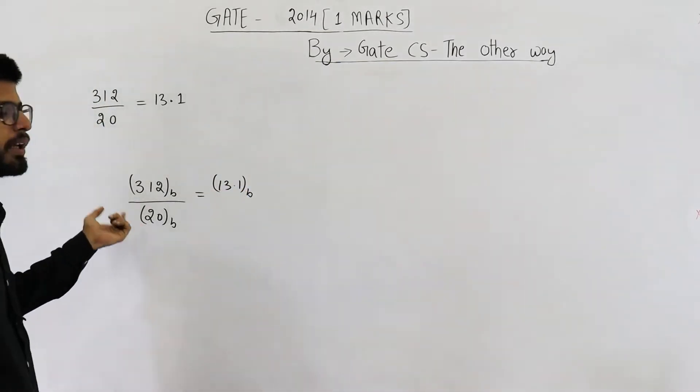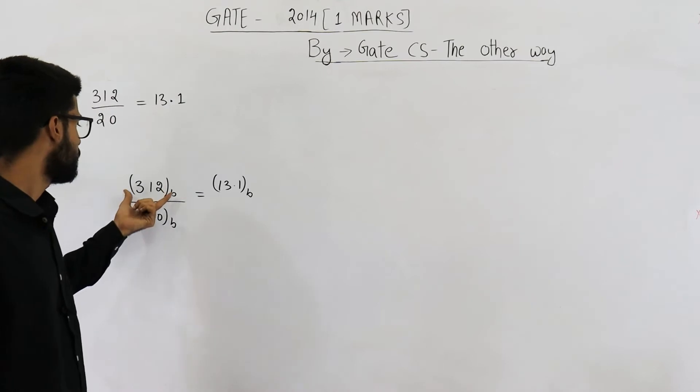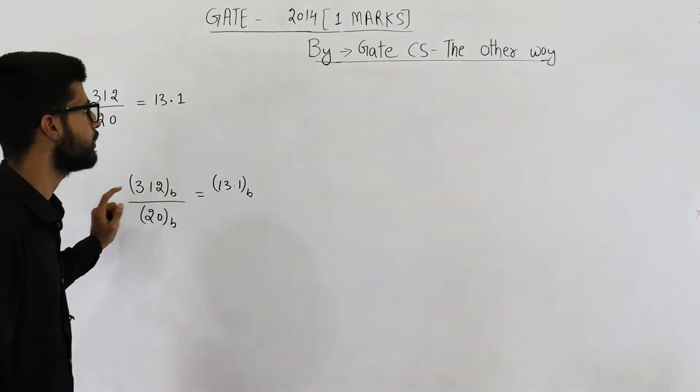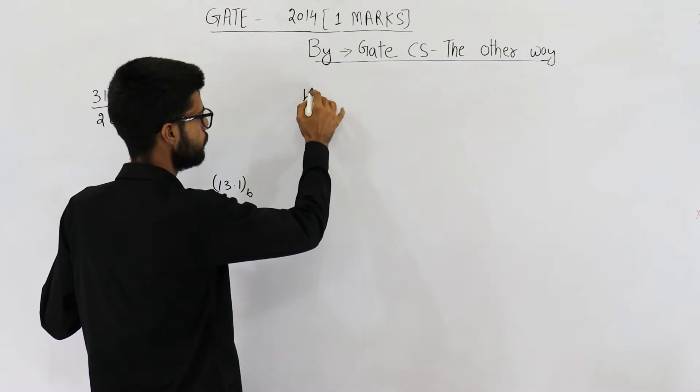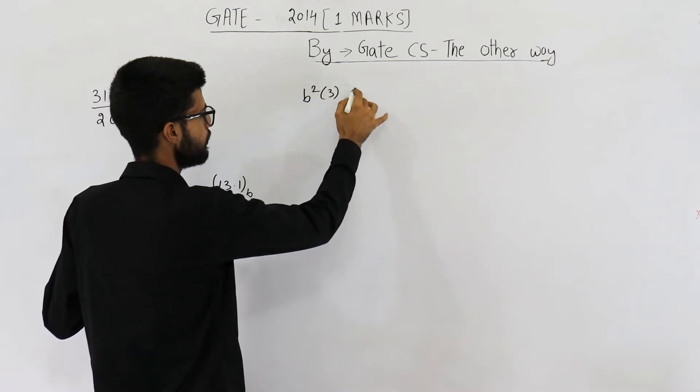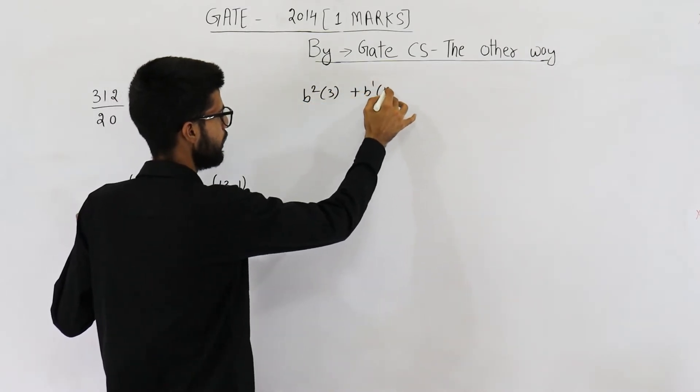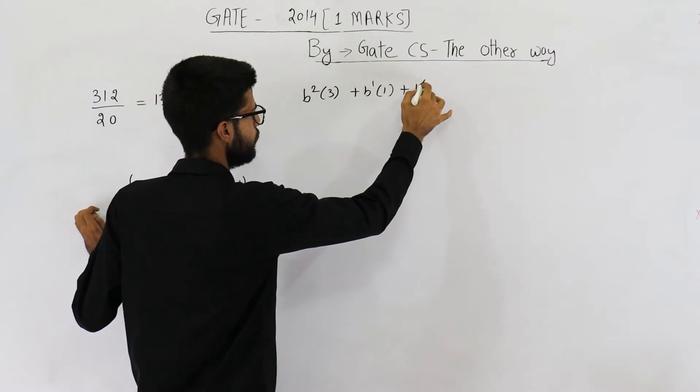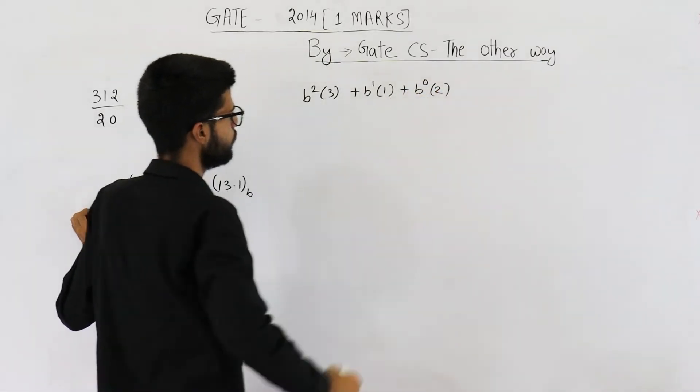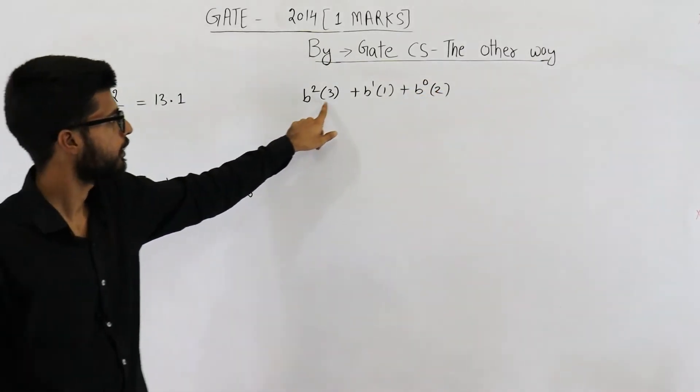Just convert the base to decimal. This will be b power 2 into 3 plus b power 1 into 1 plus b power 0 into 2. Yeah, 312.